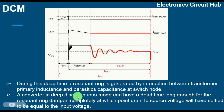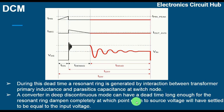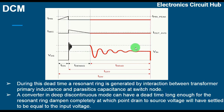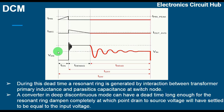A converter in deep discontinuous mode can have a dead time long enough for the resonant ring to damp completely, at which point the drain-to-source voltage will have settled to equal the input voltage. You can see the resonant ring starts with higher magnitude and then damps down completely, with the voltage settling at VDS.